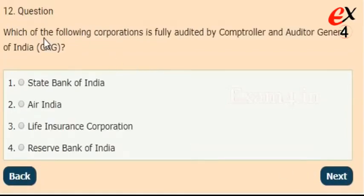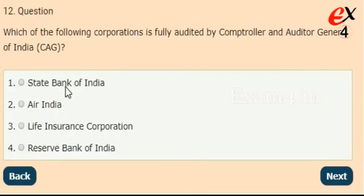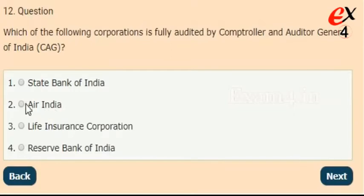Which of the following corporations is fully audited by the Comptroller and Auditor General of India? Options: State Bank of India, Air India, Life Insurance Corporation, or Reserve Bank of India. The correct answer is option 2, Air India.